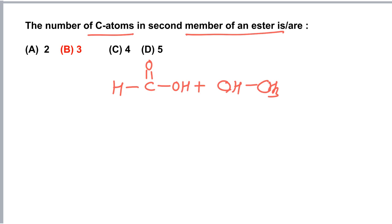So if we react formic acid with CH3OH, the simplest acid and simplest alcohol, then we get the simplest ester which is H-C double bond O, CH3. This is the first member of ester which has two carbons.